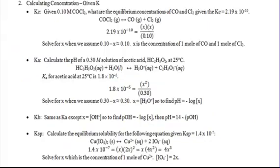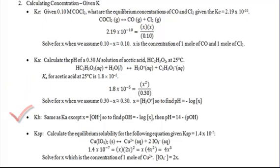That is calculating concentration given K. For Kc and Ka problems, you get X squared on top and the concentration on the bottom. For Kb, it's the same except you subtract from 14 to find pH. For Ksp, you have to put in the molar ratios inside the brackets and make sure you distribute. Hope this helped, guys — by the end of next week, you want to be masters at calculating concentration when you're given K. See you guys, bye.